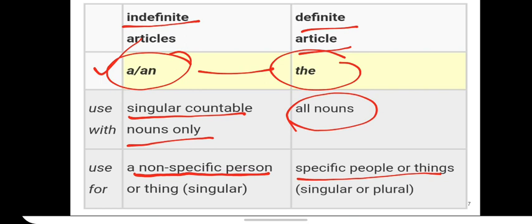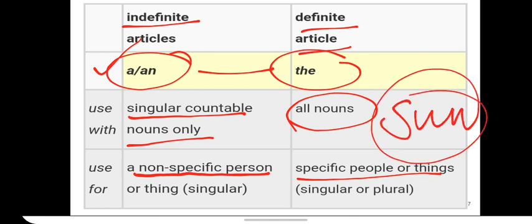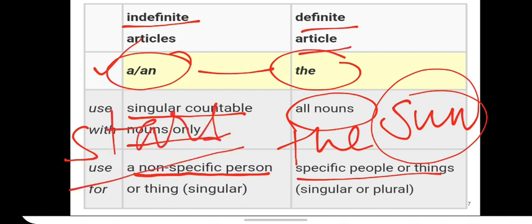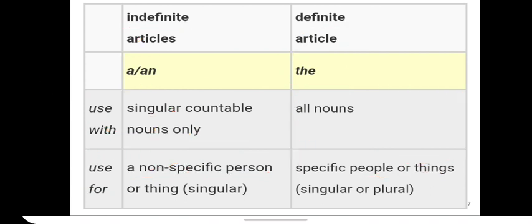For example, how many suns are there in this solar system? There is only one. So what do we call it? Because it is specific, there is only one sun. We say the sun. But how about stars? So we have plenty, right? Plethora of stars over there in the sky. So you can say a star if you're talking about star in general.